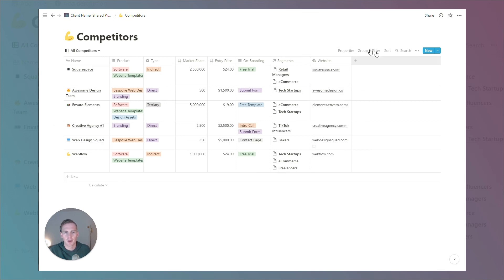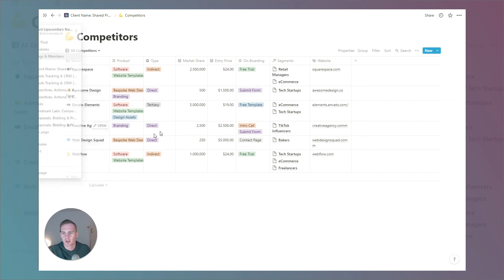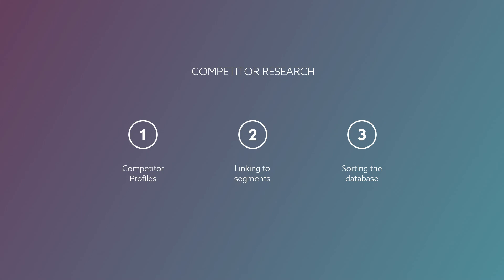To recap: if you're already doing competitive research and you'd like to consolidate it into a database that can be segmented, sorted, and linked to other parts of your business or projects, feel free to use or duplicate this Notion template. We covered how to fill in a competitor profile template, how to link profiles to various segments or other parts of your workspace, and how to sort through a database of competitors based on various profile properties.